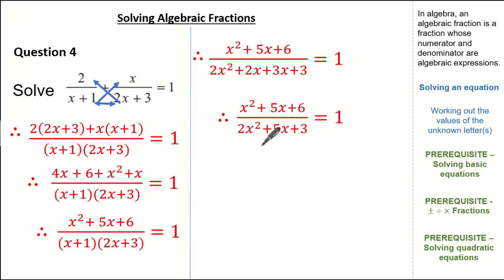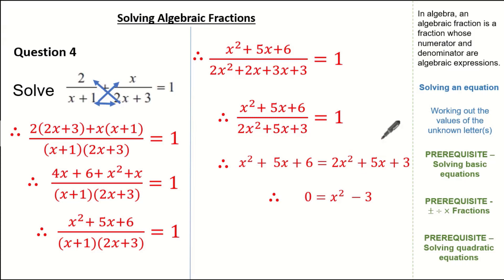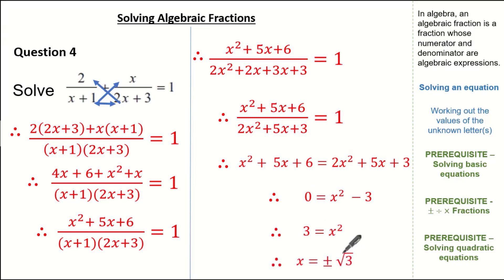From here I'm going to remove the division by our quadratic by simply multiplying both sides by (2x squared plus 5x plus 3). This gives us a quadratic on both sides. Using our knowledge on solving quadratics, I'll equate to 0: subtracting x squared from 2x squared gives x squared; 5x minus 5x is 0; and 3 minus 6 is minus 3. So our quadratic is x squared minus 3 equals 0. Adding 3 to both sides gives x squared equals 3, and square rooting both sides gives x equals plus or minus root 3.